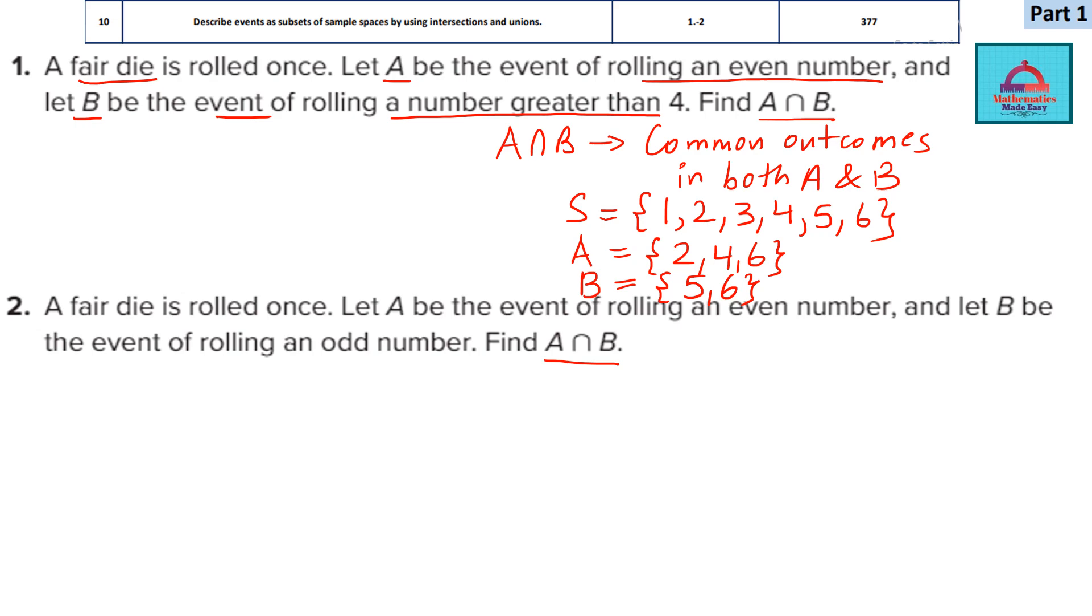So now what is the common outcome? We need A intersection B, which is the common outcome in both A and B. So if you see 2, 4, 6 is there in A and 5 and 6 is in B. So there is only one common outcome, that is the number 6. This is one favorable outcome out of a total of 6 outcomes. So the probability for this question is going to be 1 by 6.